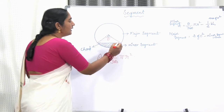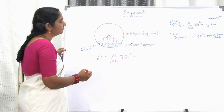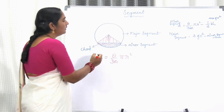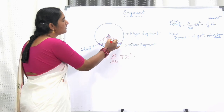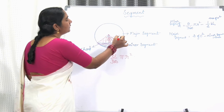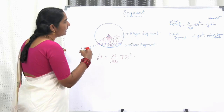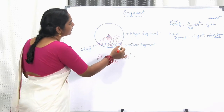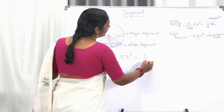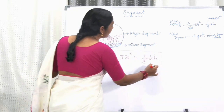From the area of the sector, if we subtract the area of the triangle — where the area of the triangle is half into base into height — then the required area of the minor segment is given by the whole area of the sector minus the area of the triangle, that is, half base into height. In this way we get the area of the minor segment. Let this be A1.